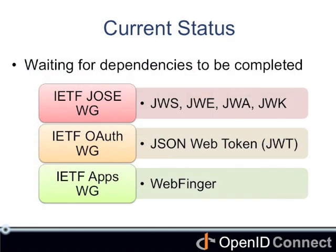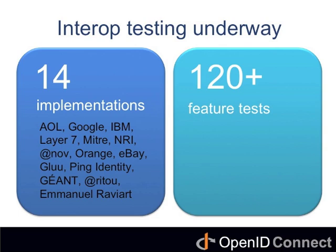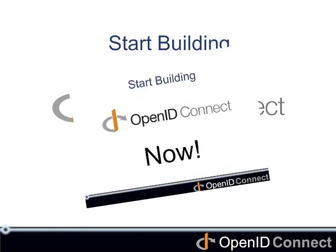The current status of the specs is that they are waiting for some underpinnings, such as JOSE specs and WebFinger, to go final. Once that's done, we can finalize OpenID Connect and put it into the final membership vote. In the meantime, people are implementing the current draft. Right now, 14 solutions are performing interop tests encompassing over 120 feature tests. So, start building OpenID Connect — now.